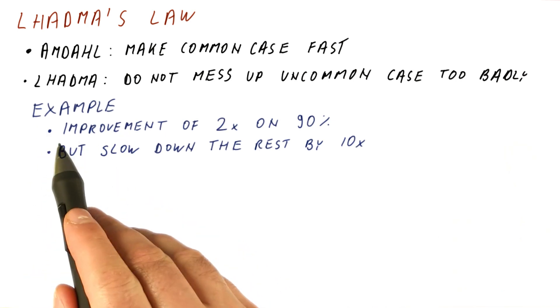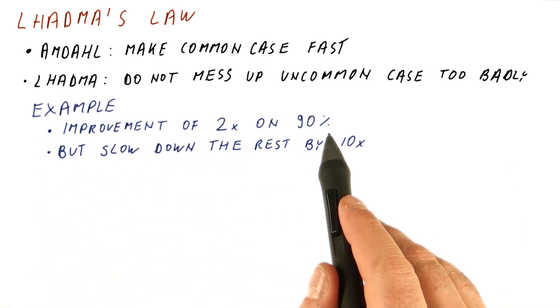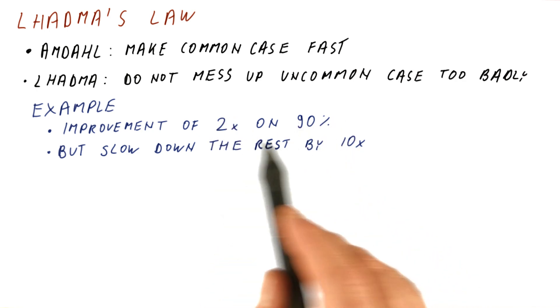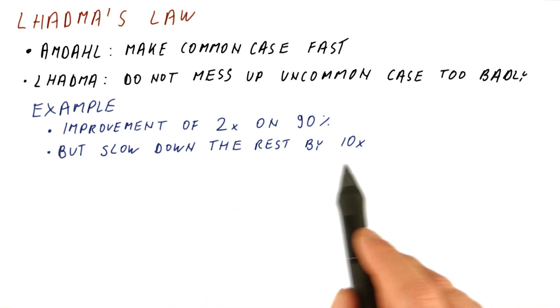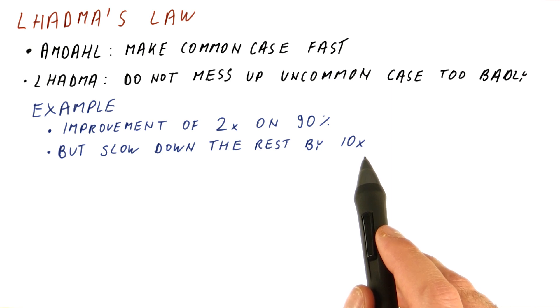Let's consider an example in which we can achieve an improvement of a factor of two on 90% of the execution time. So we can achieve a speedup of two on 90% of the execution time, but at the cost of slowing down the rest by 10x. Meaning the remaining 10% now get 10 times as much execution time as before.